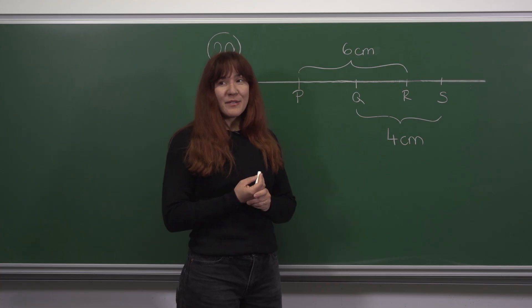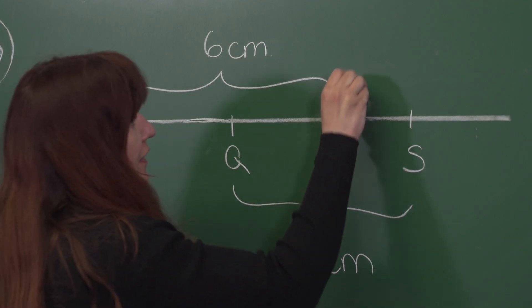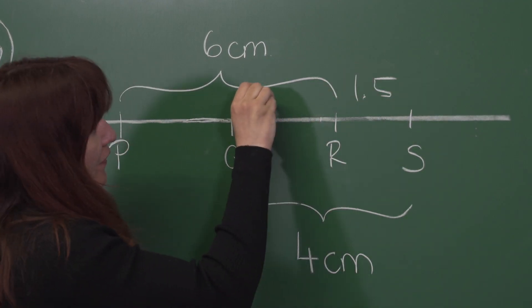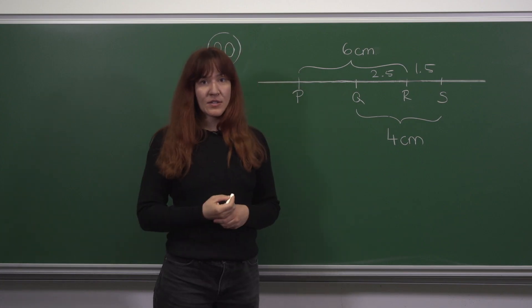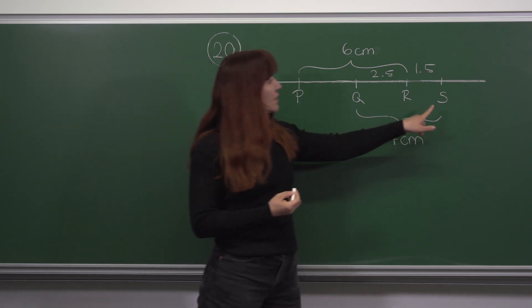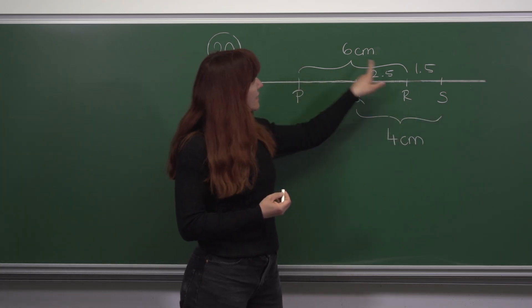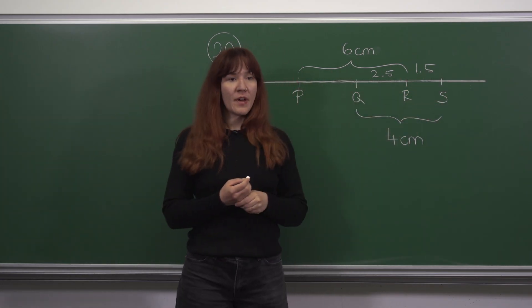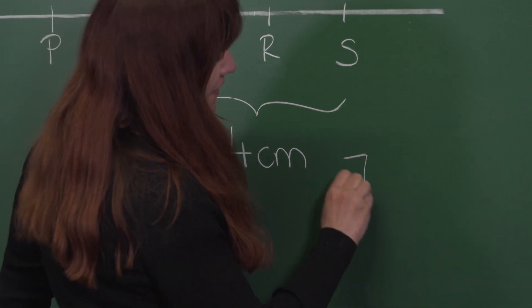After a bit of thinking we can figure out that 1.5 and 2.5 satisfy these conditions. From here we can just see that the distance from P to S is six plus 1.5, that is 7.5 centimeters.